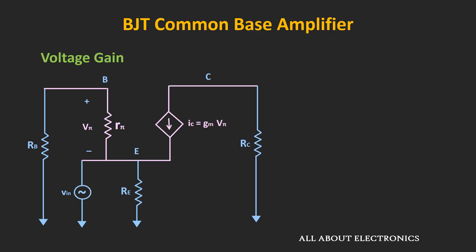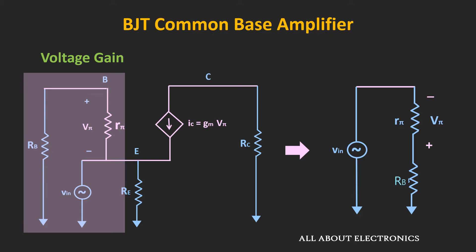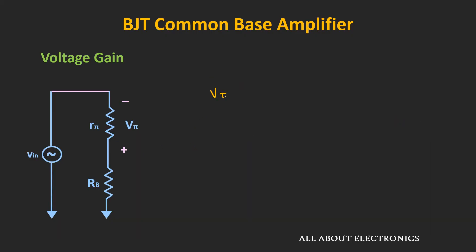First of all, let's find out the voltage gain. This current is the collector current. So we can say that the output voltage Vout is equal to minus IC times RC, or it is equal to minus GM times Vpi times RC. To find the voltage gain, Vout divided by Vin, we need to find the expression of Vpi in terms of the input voltage. Now, if you see over here, resistor Rpi and Rb are connected in series, and that series connection is connected in parallel with the input signal. So we can say that Vpi is equal to minus Vin times Rpi divided by (Rpi plus Rb), because the polarity of the voltage Vpi is opposite to the input voltage.